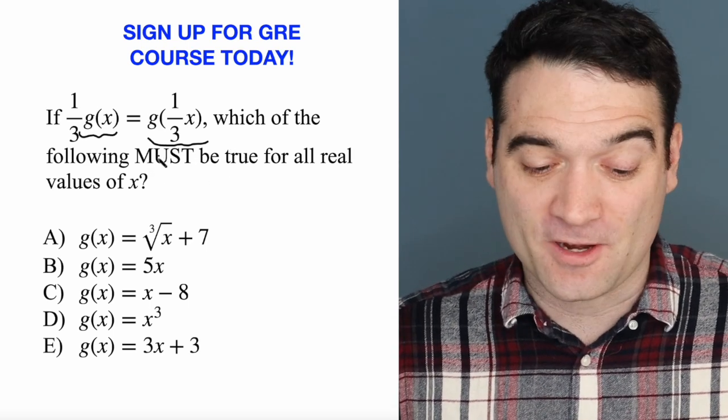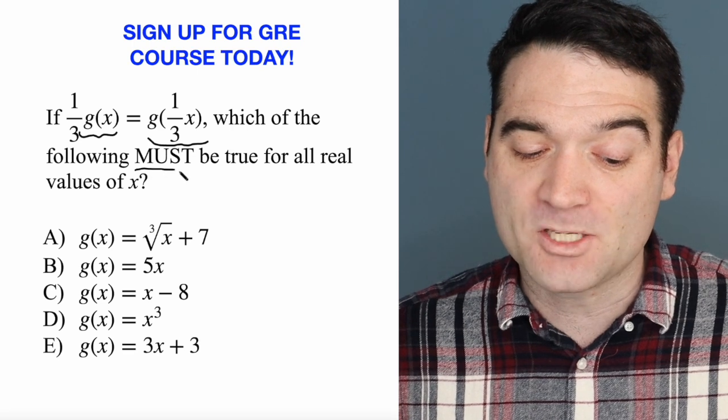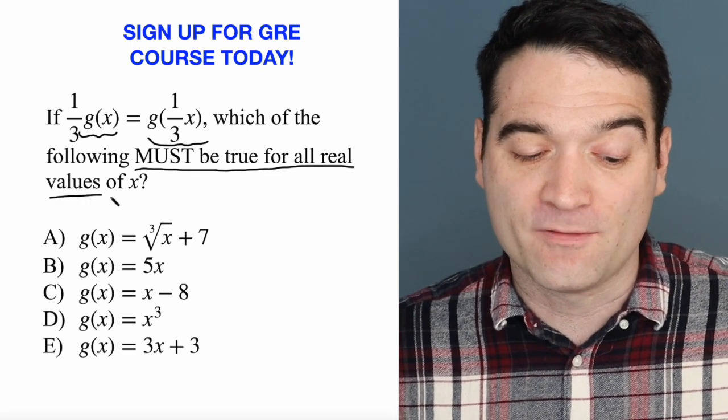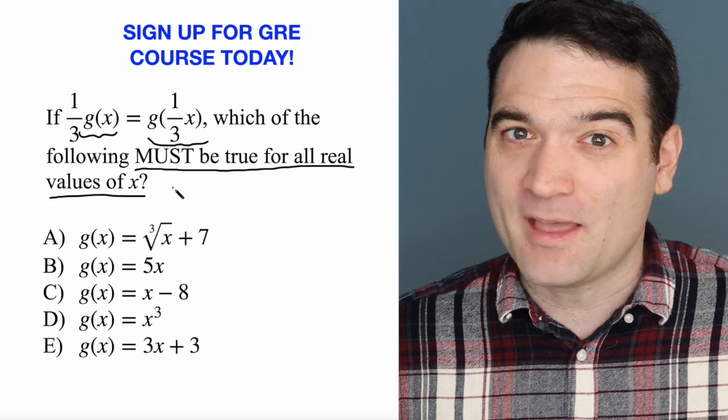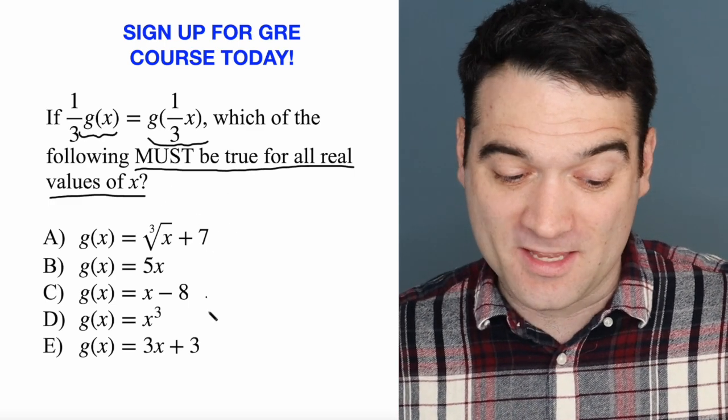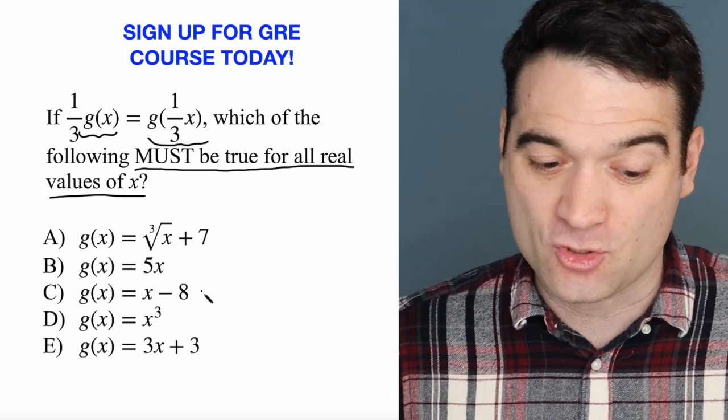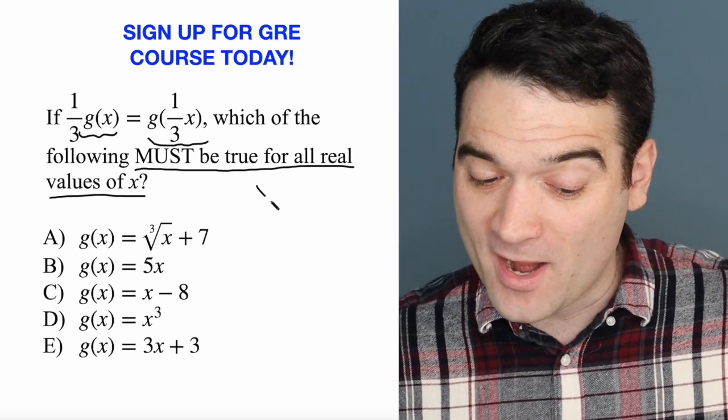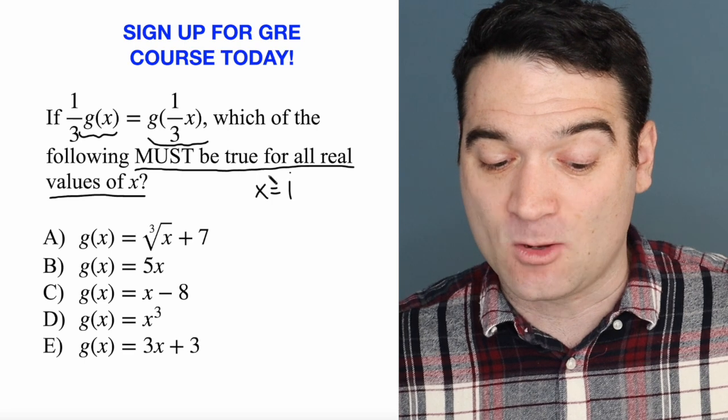Now, the second part of the sentence is very important. We're looking for something that must be true for all real values of x. That means that we should be able to pick a value of x, and one of these answer options will always be true. So why don't I start by saying x equals one?